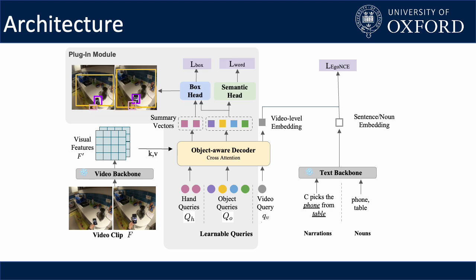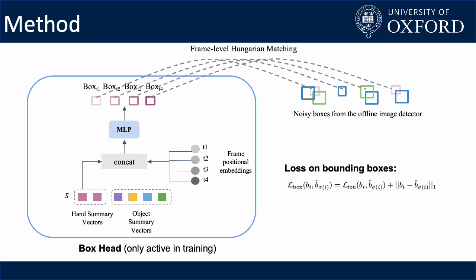These summary vectors are used to predict bounding boxes and the alignment of objects and words. To predict object locations, we use one single object summary vector to predict the trajectory of one object across the whole video clip. The summary vector is concatenated with a frame index embedding to predict boxes at the corresponding frame. As supervision, we run a hand-object detector to provide boxes as pseudo-labels at each frame, and use Hungarian matching to match the predictions to labels before applying loss on boxes. Although we do not apply any supervision on ID association between frames, we found that the predicted boxes from the same summary vector learn to focus on the same object because of the natural visual consistency in videos.